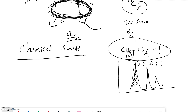Chemical shift is defined as the difference in the absorption position of a particular proton, due to variation in its chemical environment, from that of an isolated proton. For an isolated proton we get field strength B₀; for the sample we get B_s, and this difference is the chemical shift for that particular proton.